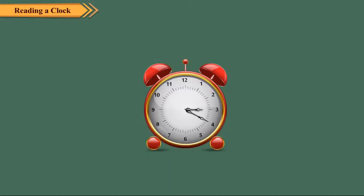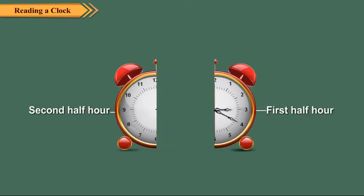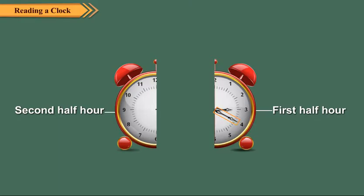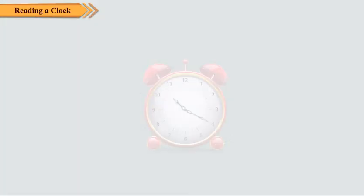Think of the dial of a clock as two halves. When the minute hand is in the first half hour, we use the word 'past.' And when the minute hand is in the second half hour, we use the word 'to.'